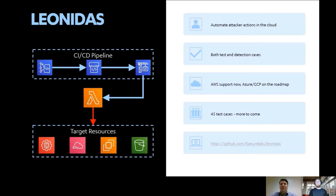And lastly, please do have a go with Leonidas and let us know what you think. It's available on GitHub at F-Secure-Labs slash Leonidas. We currently support AWS, and Azure and GCP are pretty close to being done. At the moment we've got 45 test cases for AWS — you saw some in the demo, there are quite a few others too. Go and play with it. And those test cases reflect what we've needed so far, but they're pretty easy to write, so please do contribute your own pull requests — more than welcome. And that's it from us. Thank you.